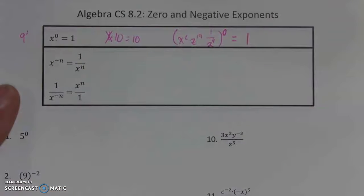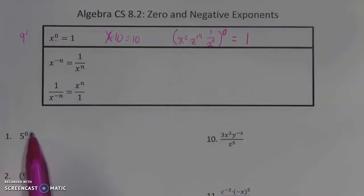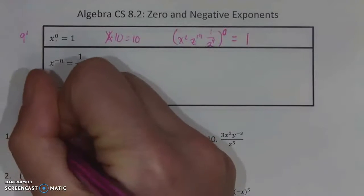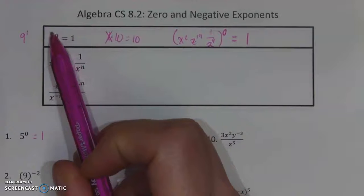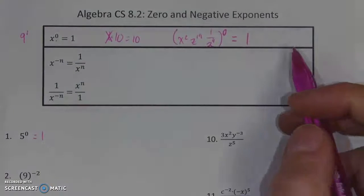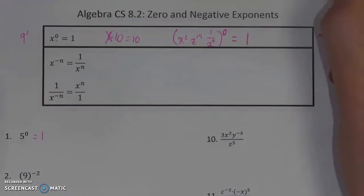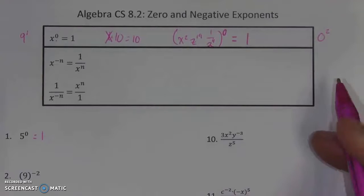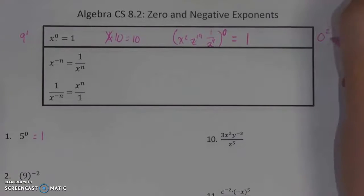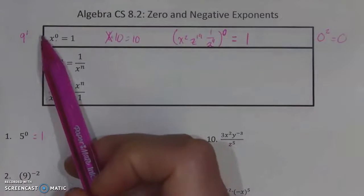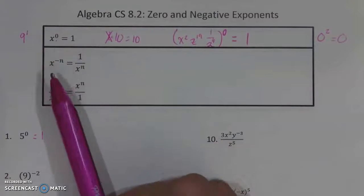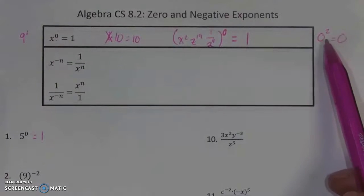You can look down the worksheet and find things raised to the zero power. For instance, five to the zero — immediately I could just write one. It doesn't take much thought. The only thing you need to watch out for is make sure it is the exponent that is zero. If you have a zero raised to an exponent, that is asking about something different. Zero to the second power is zero times zero, which gives you an answer of zero. So watch where that zero is placed — we're talking about the exponent of zero, not the base of zero.